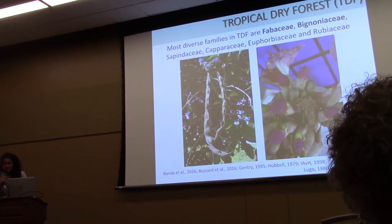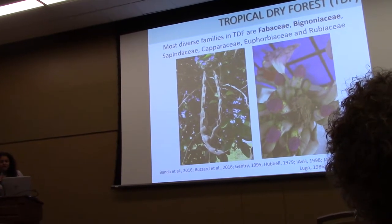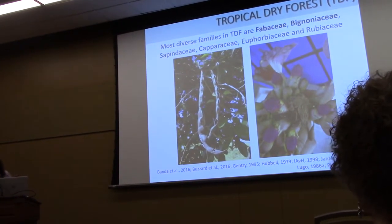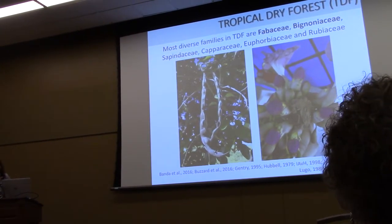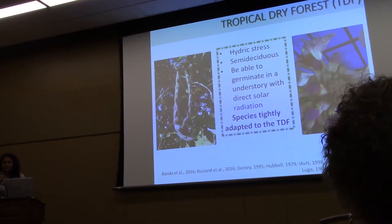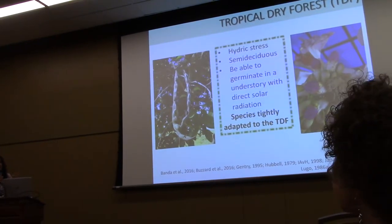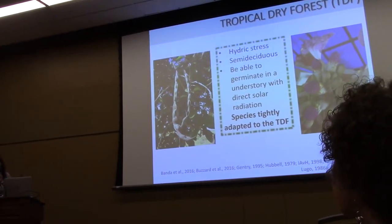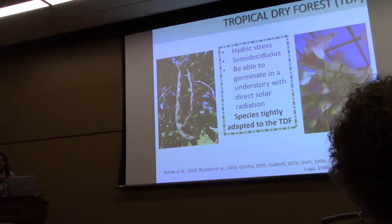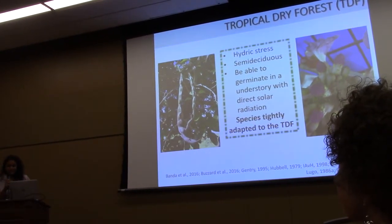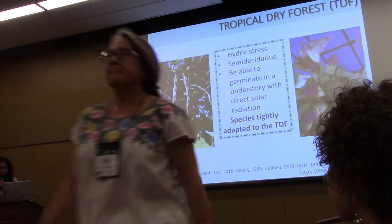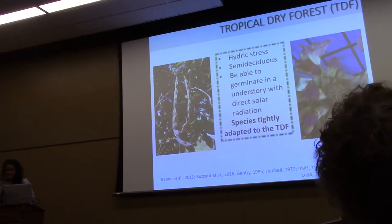One of the most interesting characteristics of this forest is that the most diverse families found here are almost the same worldwide. This composition must be related to the fact that plants must tolerate hydric stress. Some of them are semi-deciduous, and because of that, plants must be able to germinate in the understory with direct solar radiation. So species are tightly adapted to this kind of forest.